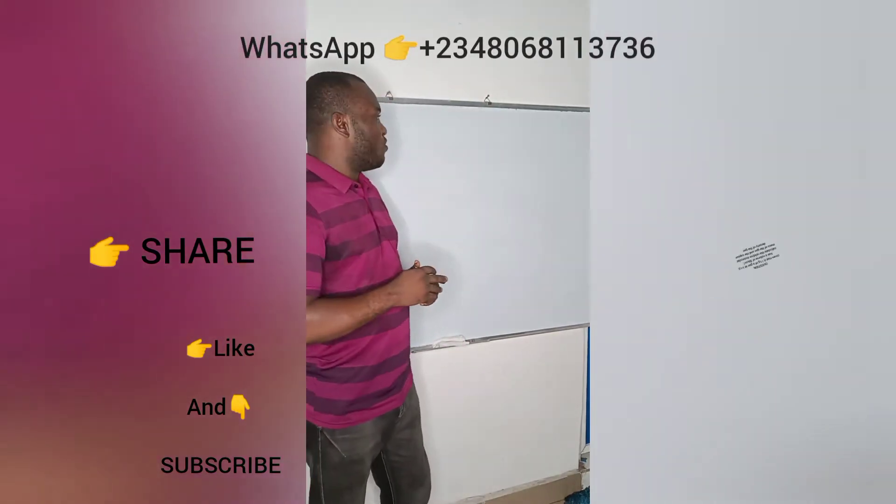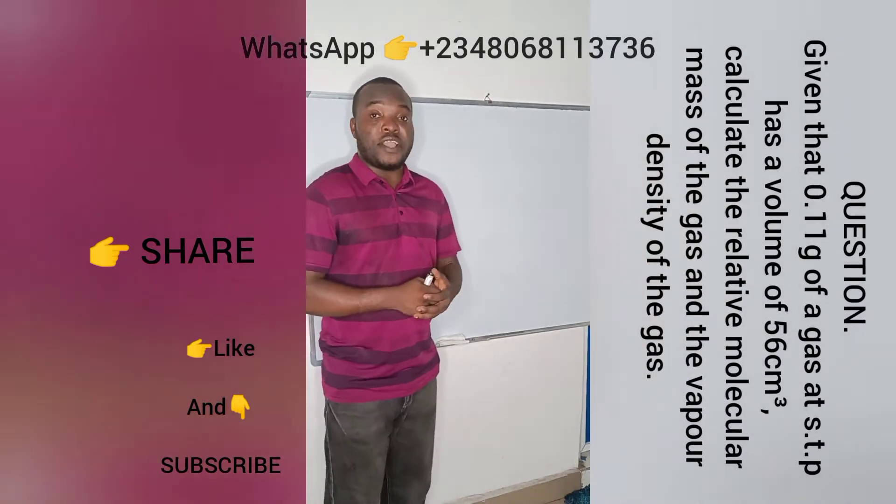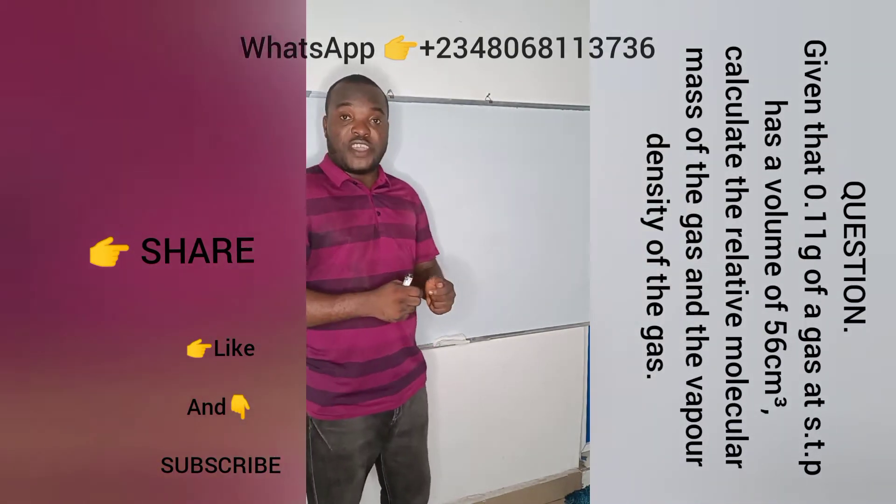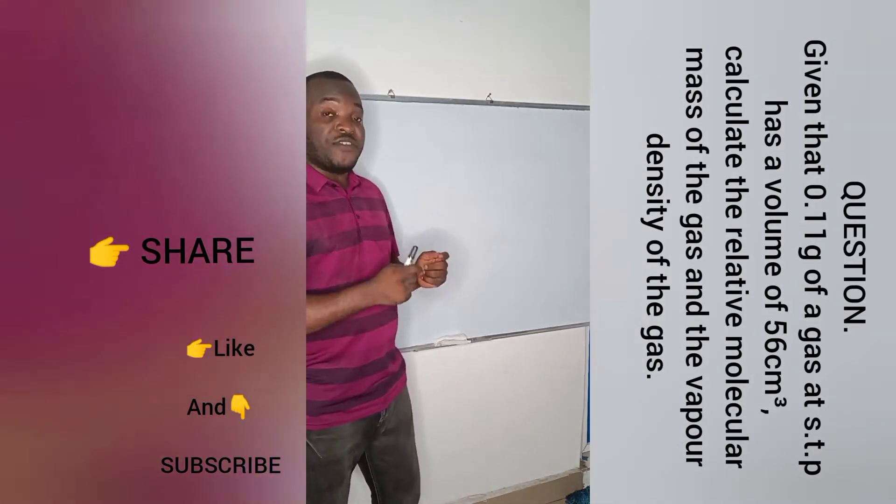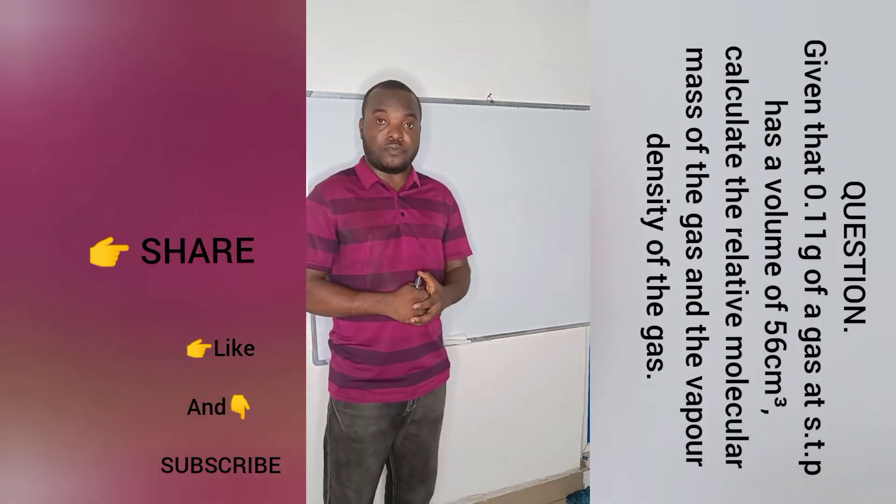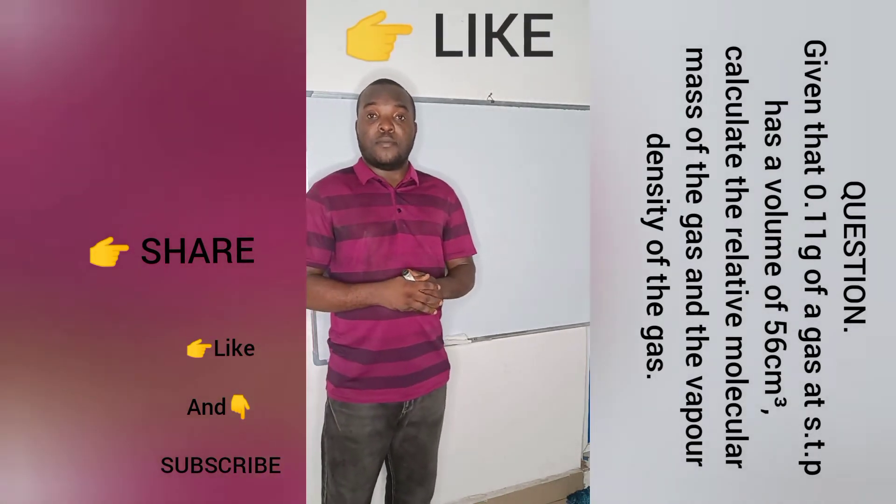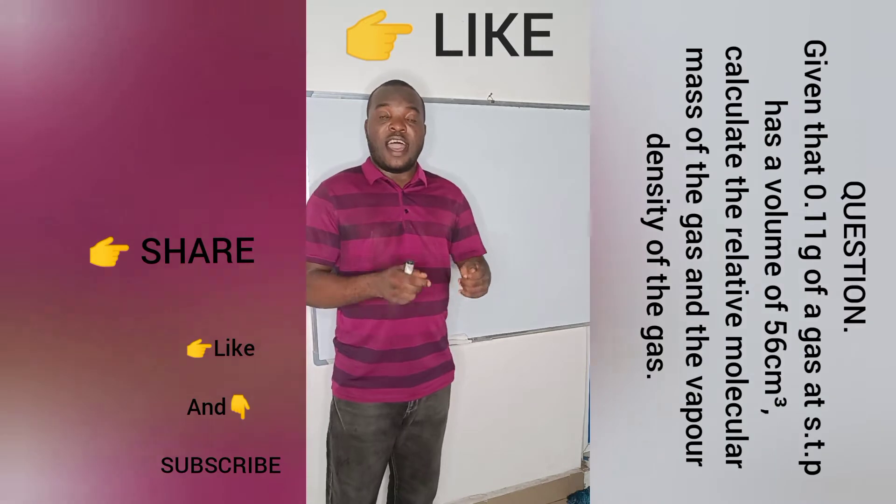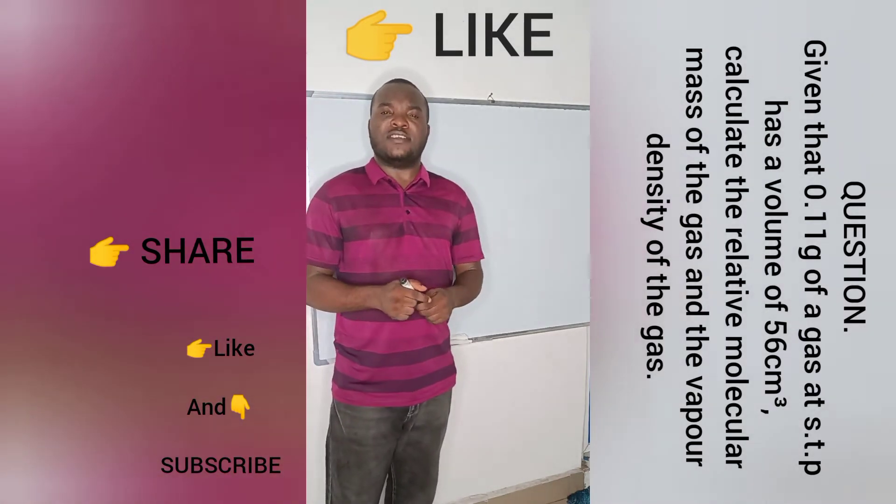Let's take a look at this question that says, given that 0.11 gram of a gas at STP has a volume of 56 cm³, calculate the relative molecular mass of the gas and the vapor density of the gas. Let's solve this problem.